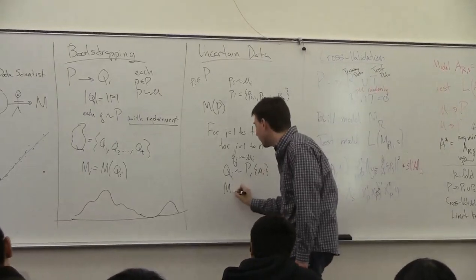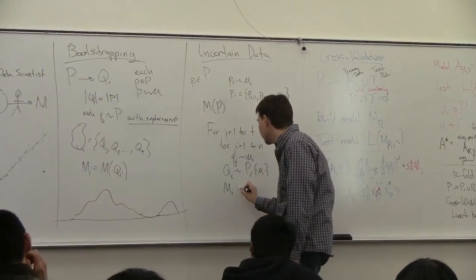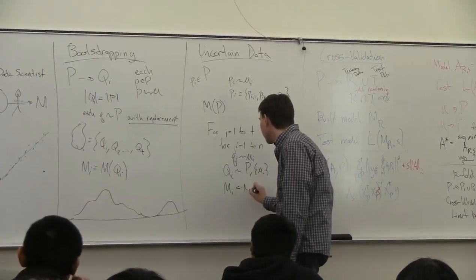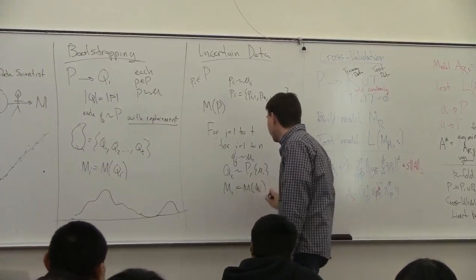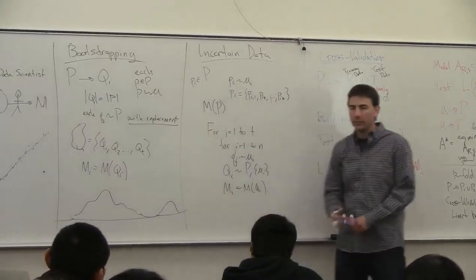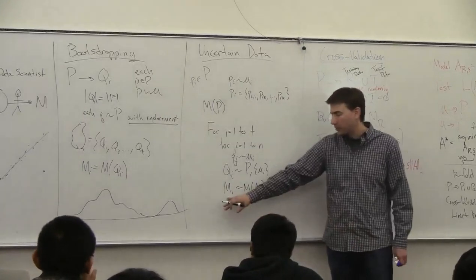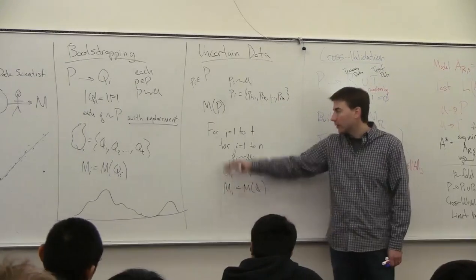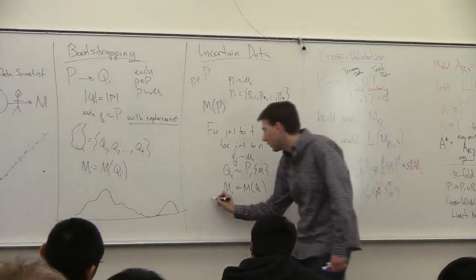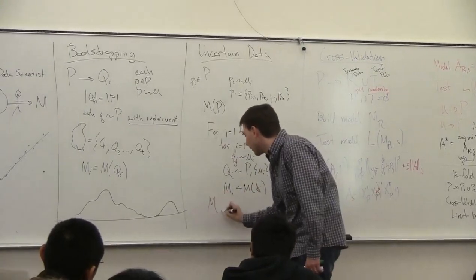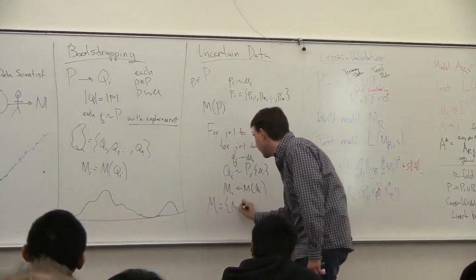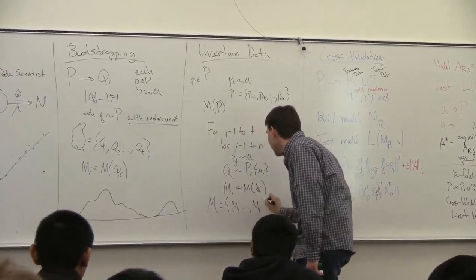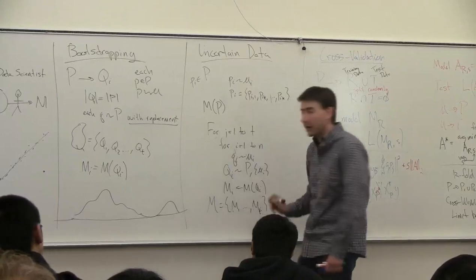And then you can create your model i of qi in a very similar way to how you did bootstrapping. And you get output this model, and you've done this t times, so you're going to get this set up to mt of these models.